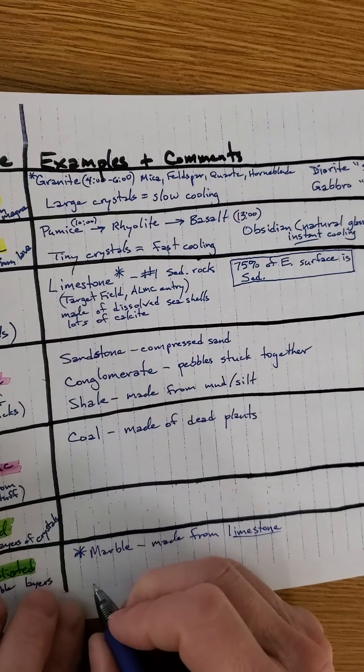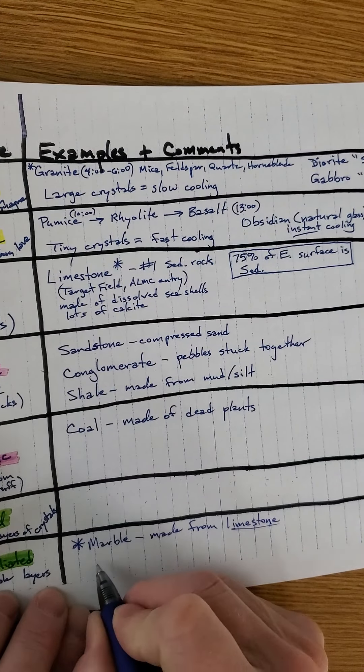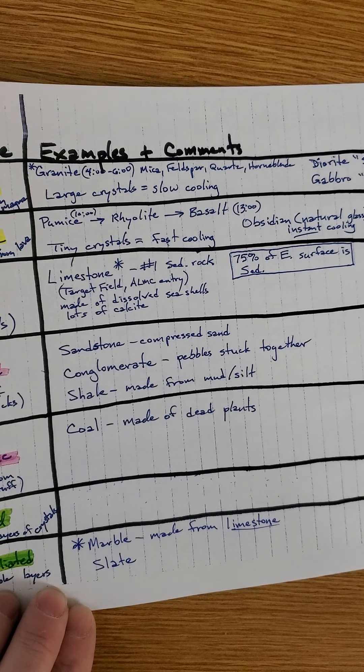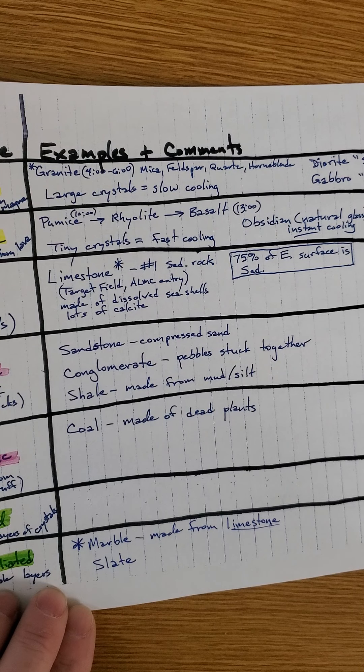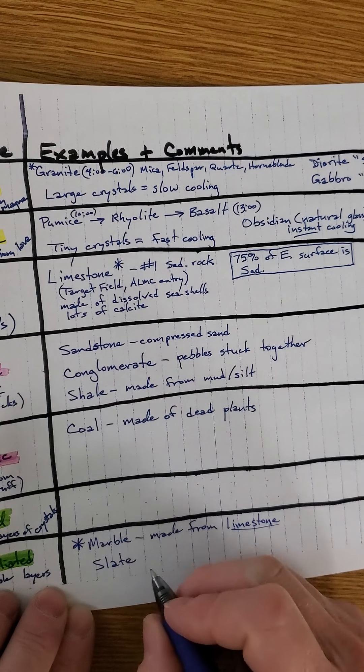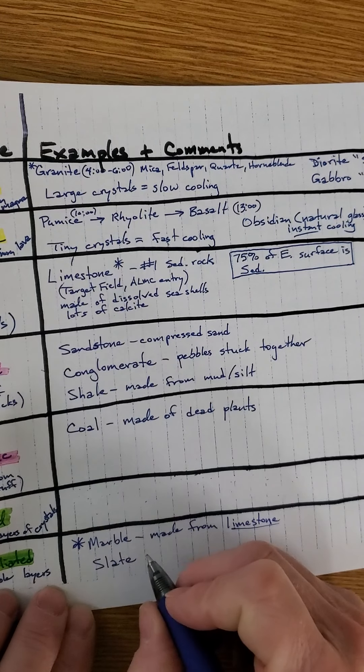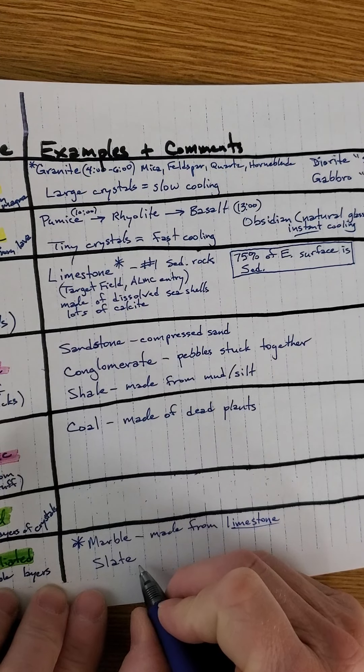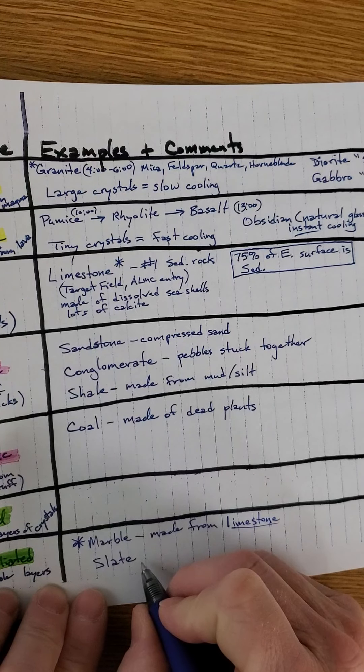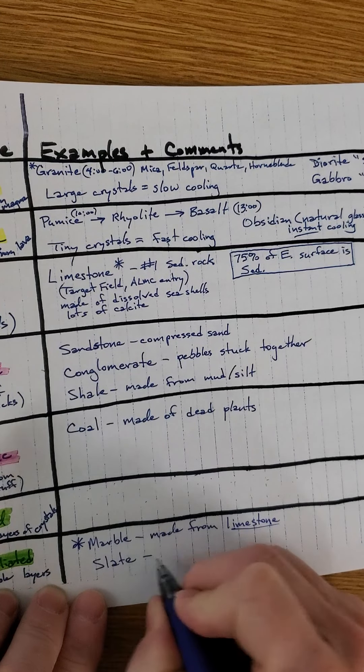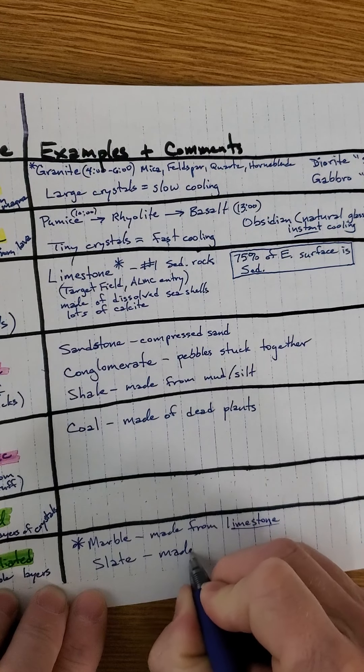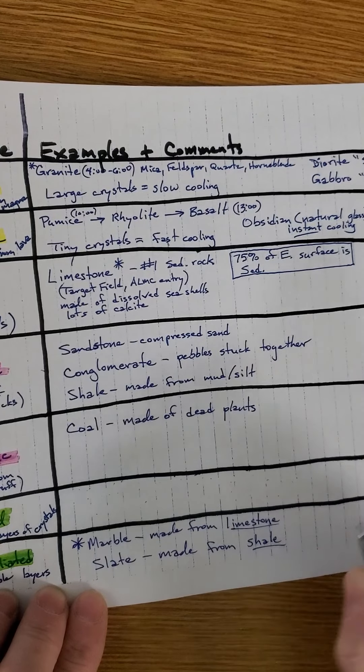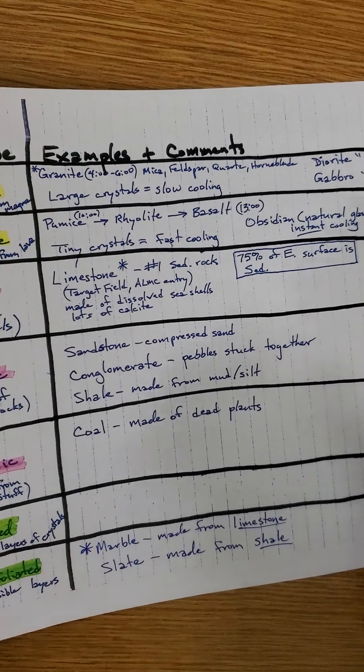It doesn't have visible layers of crystals in it. Now, let me give you another one. Slate. I don't know if you've ever seen what's underneath the felt of a pool table. The expensive, higher quality pool tables are very heavy pieces of slate. Slate is made from shale.